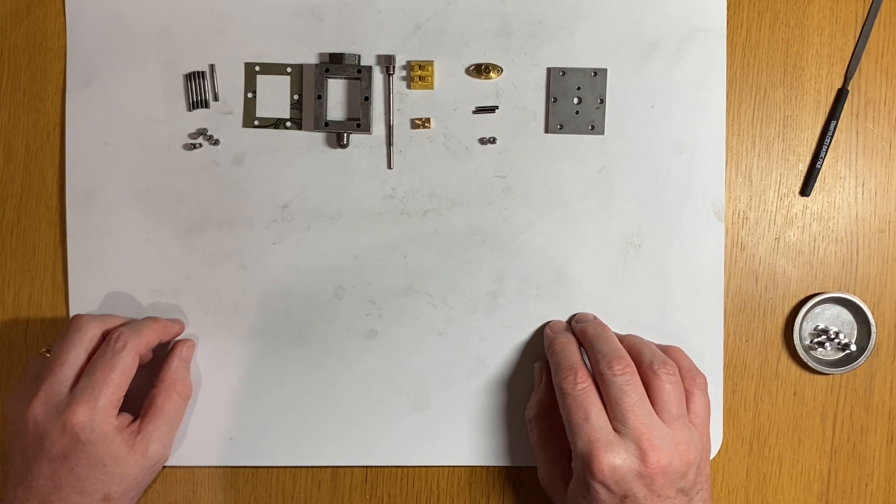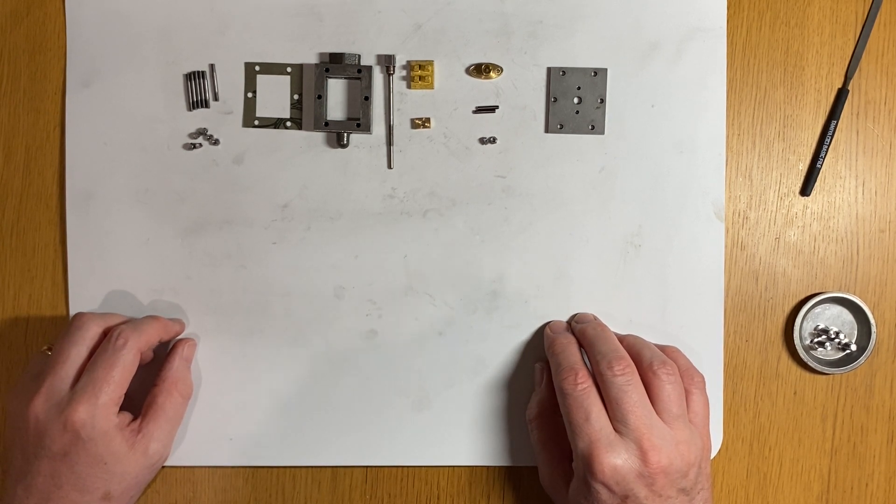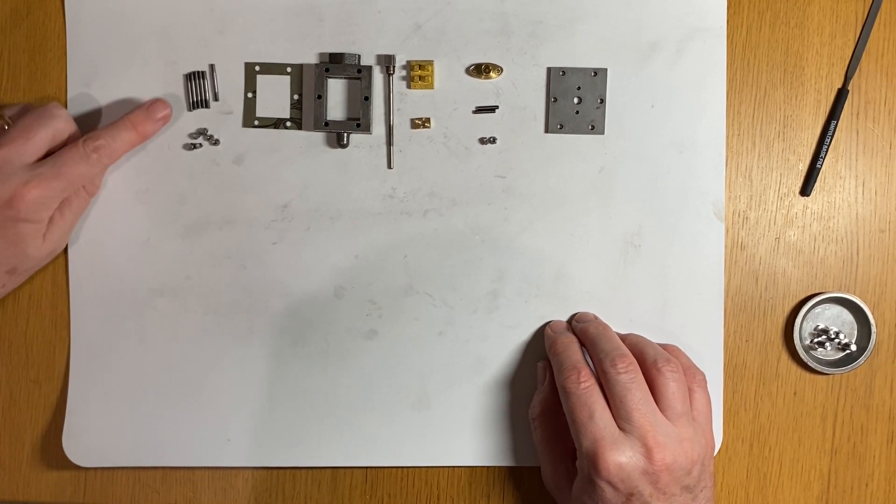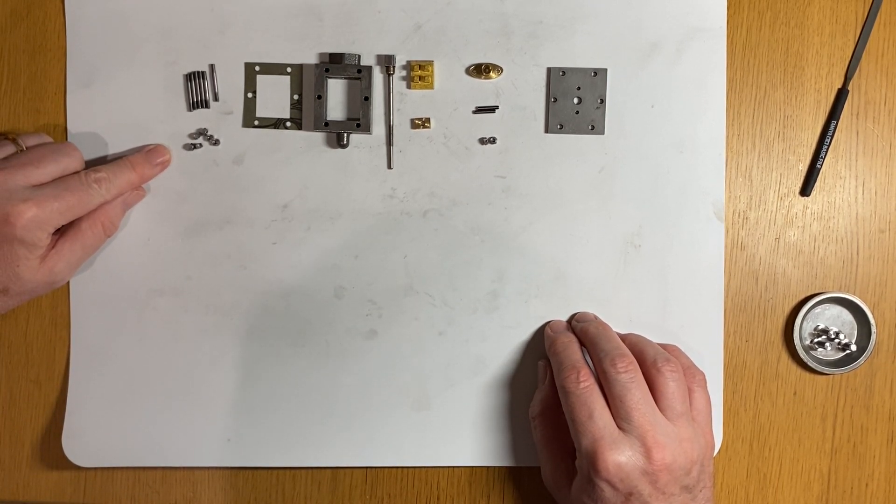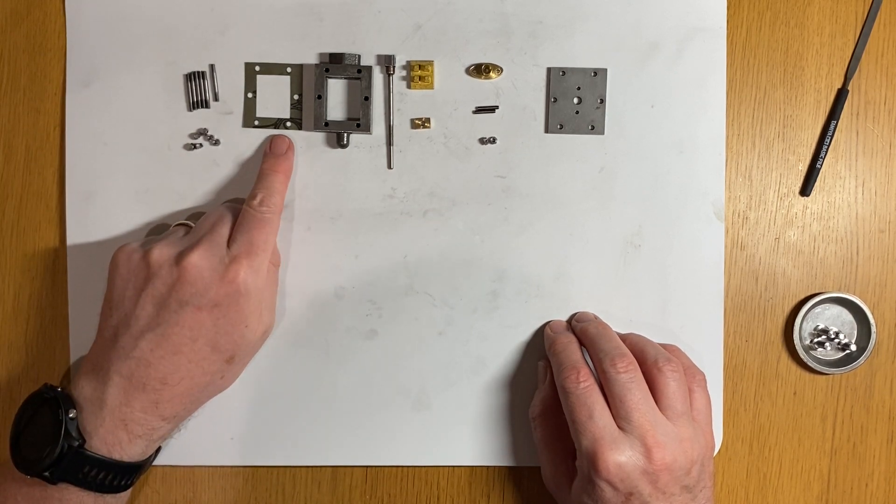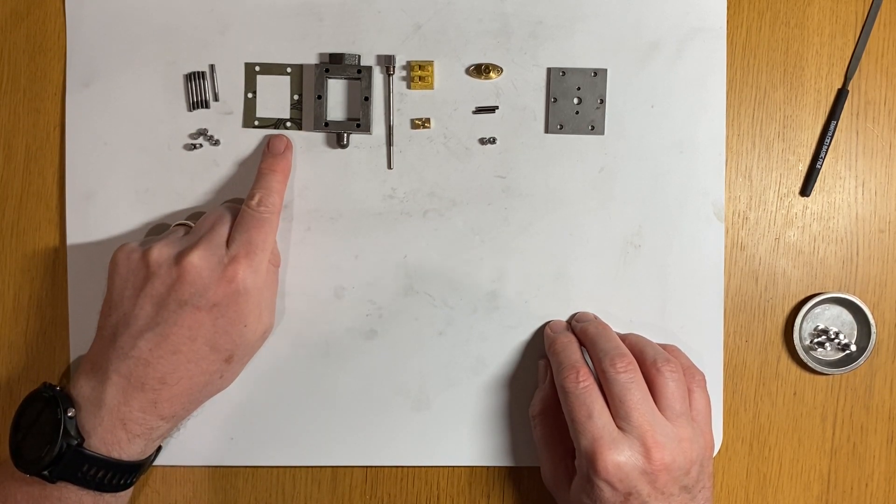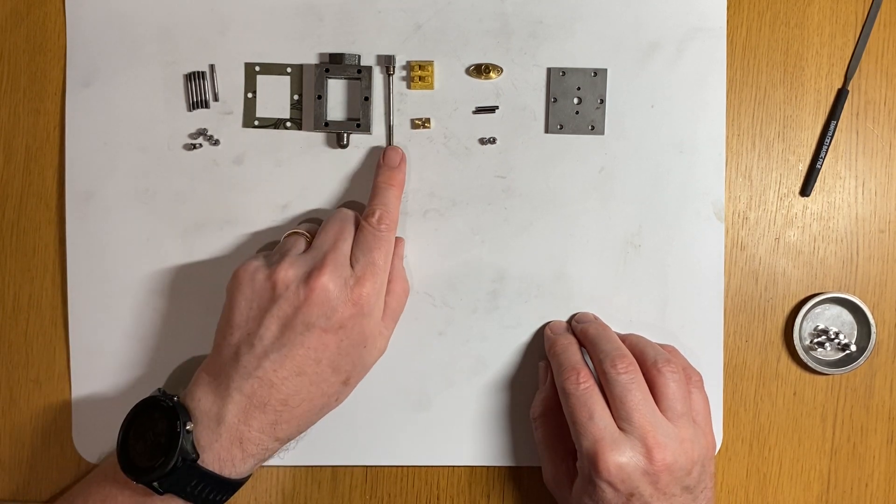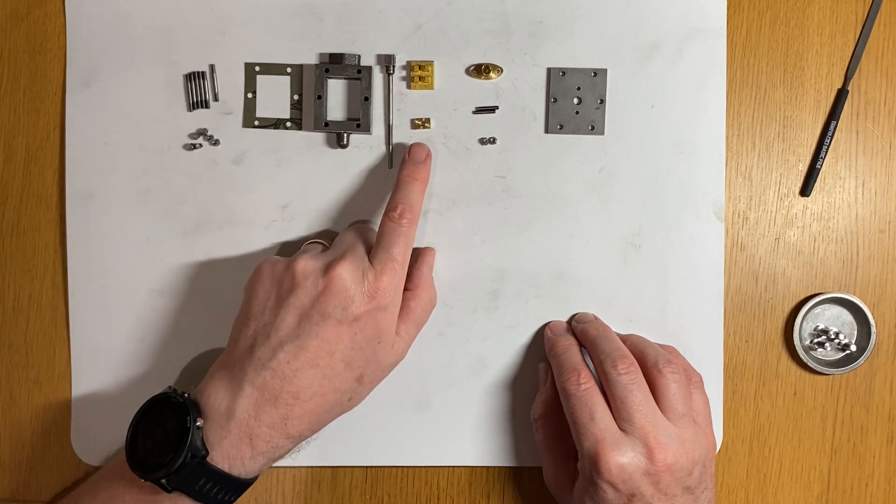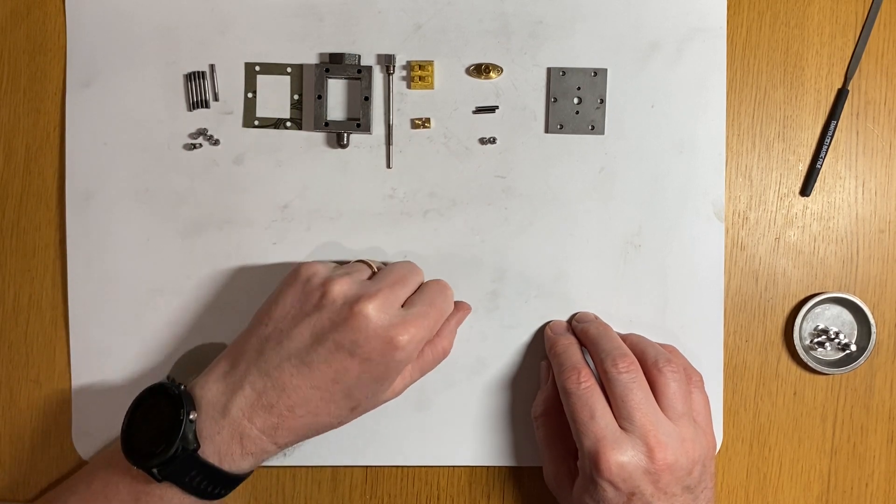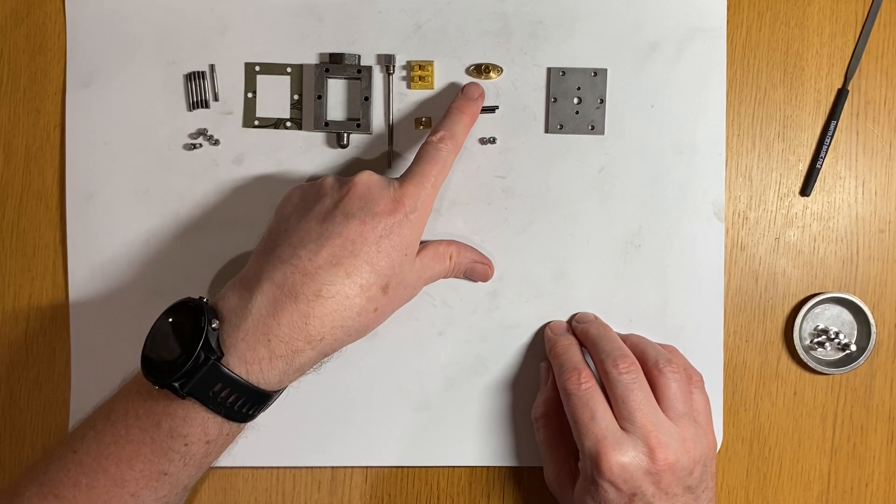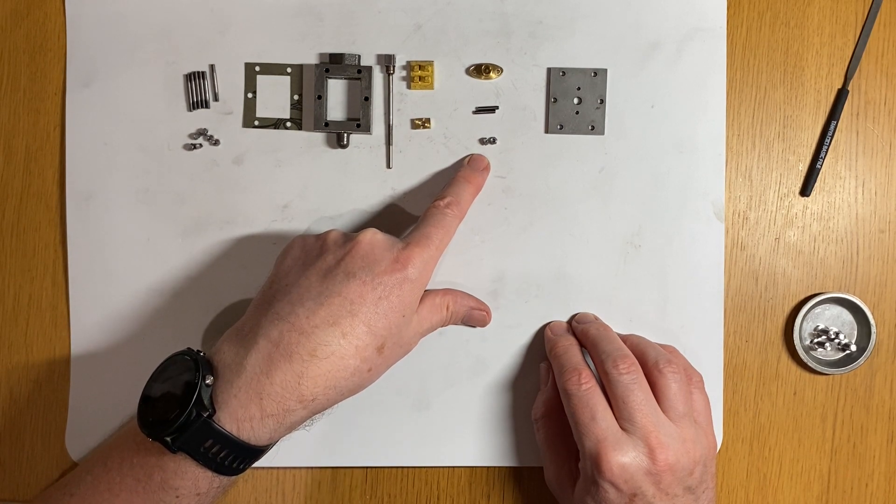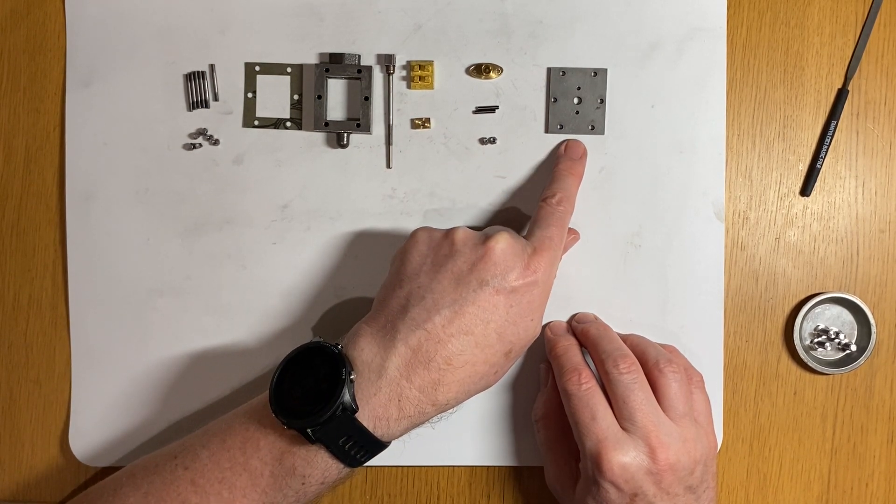I've got the parts ready: the studs and nuts to fix the valve chest to the cylinder, the gasket. I'm going to use a gasket this time because I need to make sure that the valve isn't pressed too tightly against the face. The valve chest, the valve rod, the valve, the valve nut, the gland and the stud and nuts to fix it, and finally the valve chest cover.